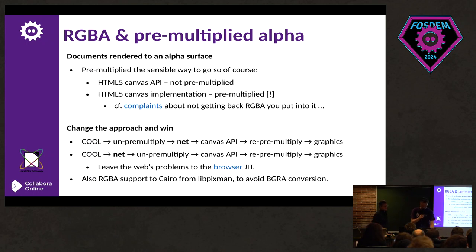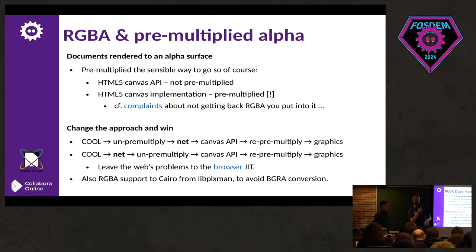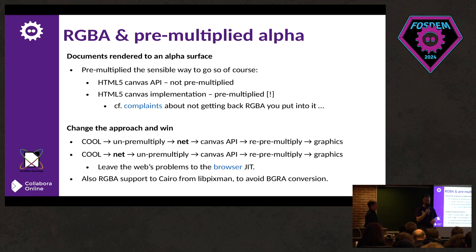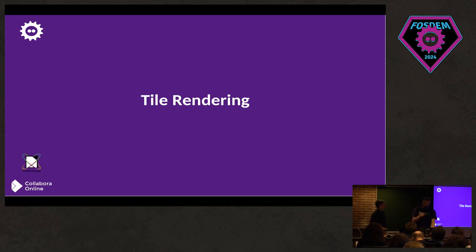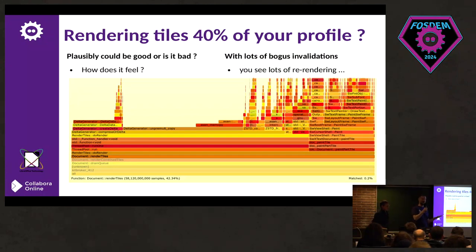Working out where to do work — in the browser or not — and the stupidity of the web having an un-pre-multiplied alpha API when almost certainly everything underneath the hood — all hardware — is doing pre-multiplication because it's so much quicker. You can see complaints online about people pushing RGBA into the canvas and getting something back that isn't the same, because it's been pre-multiplied and then un-pre-multiplied. The web APIs are awesome.